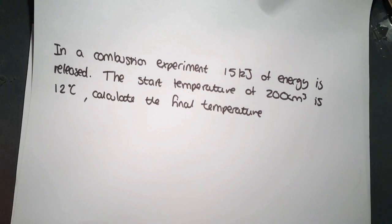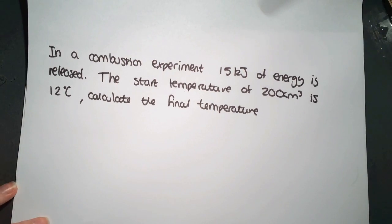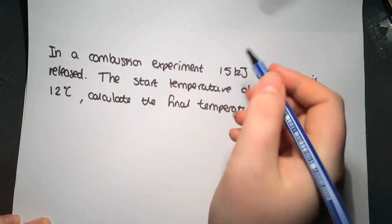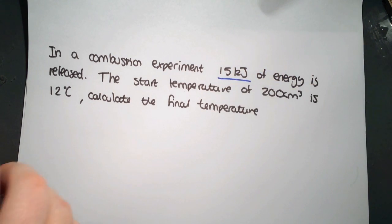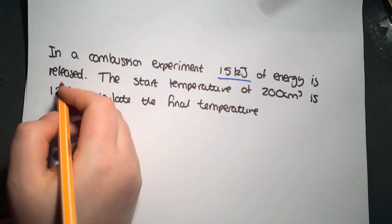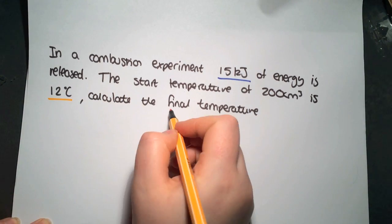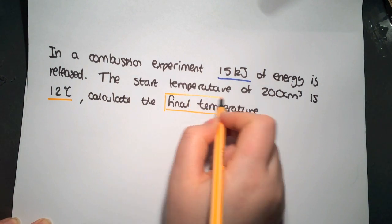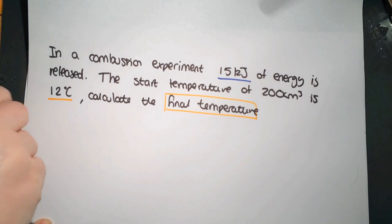This next example is slightly different. We have been given the energy. So we are going to be calculating something else in this case. So we have an energy of 15 kilojoules. We have a start temperature, 12 degrees, and we are trying to calculate the final temperature. So this is slightly different.